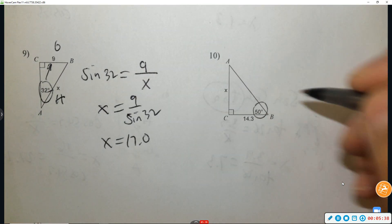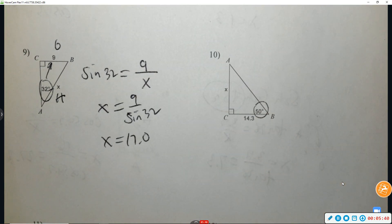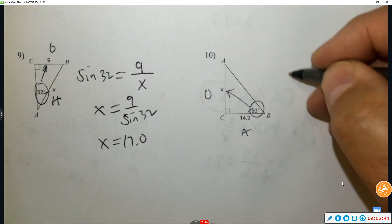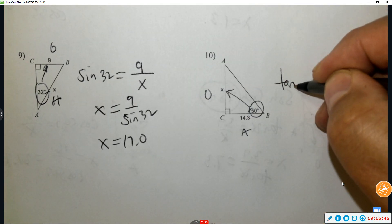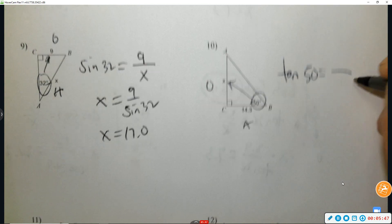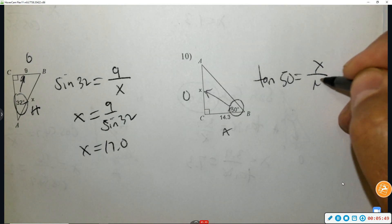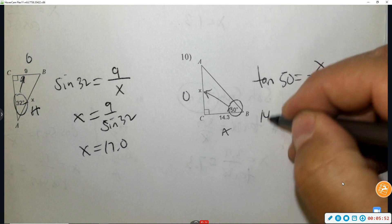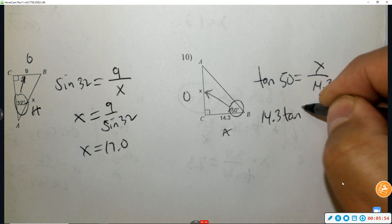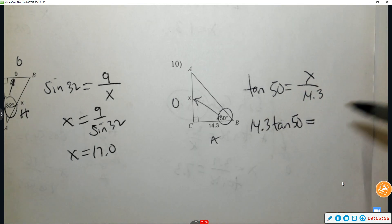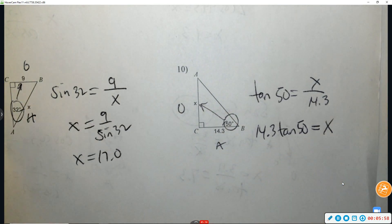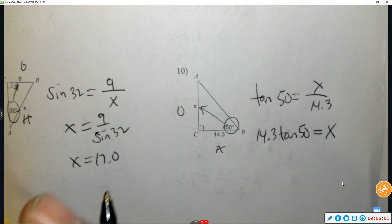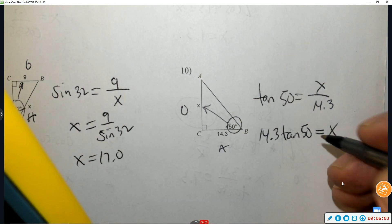Number ten: circle the angle — press pause and try it. Opposite and adjacent, that's tangent of 50 degrees, equal to x over 14.3. Because x is in the numerator, we multiply to get x by itself. You get 17.